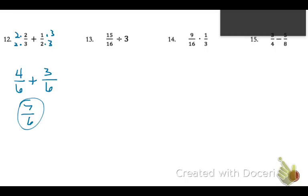Number 13, we're taking 15 sixteenths, and we're dividing by 3. But we can think of this as 3 over 1. And when you divide fractions, it's the same thing as multiplying by the reciprocal of the second fraction. So I'll just change that. Then I just multiply numerators together. So 15 times 1 is 15, and denominators together, 16 times 3 is 48. Now I look for a common factor.